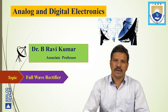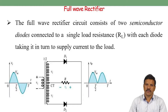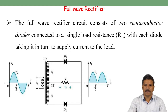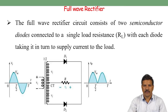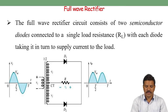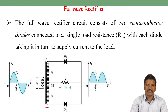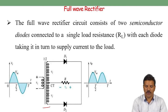In this class, I am going to explain about the operation and analysis of the full wave rectifier. Starting with the circuit diagram — the full wave rectifier uses a center tap transformer, two diodes D1 and D2, and one load resistor.